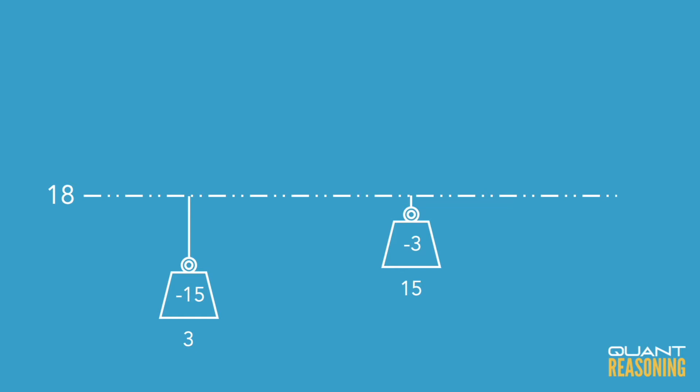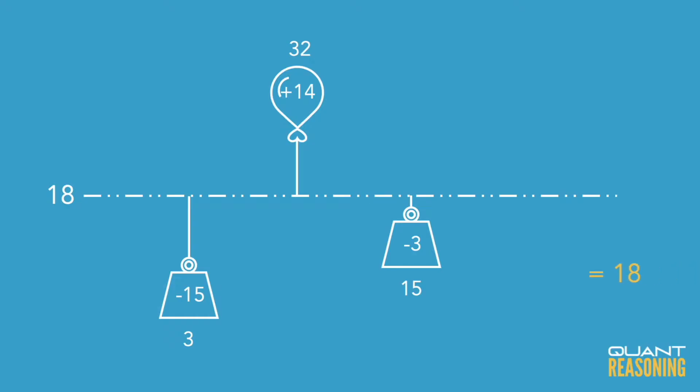On the higher end, we have 32, which is 14 above 18. When I try to balance these out, I notice that pulling down we have four more than pulling up.